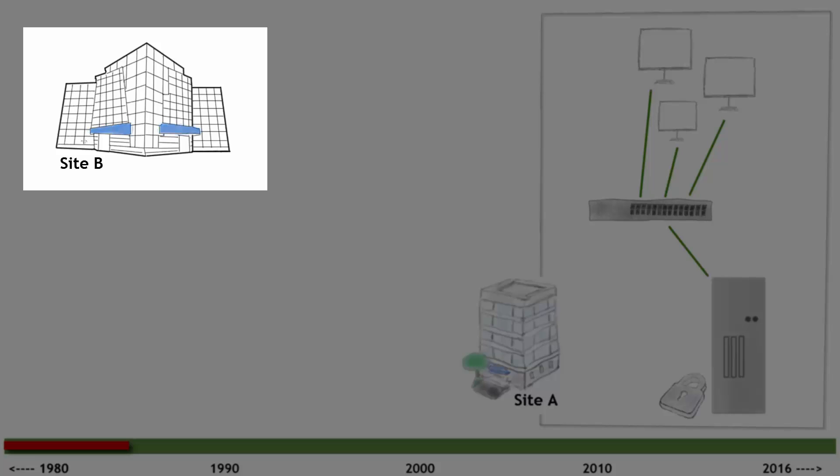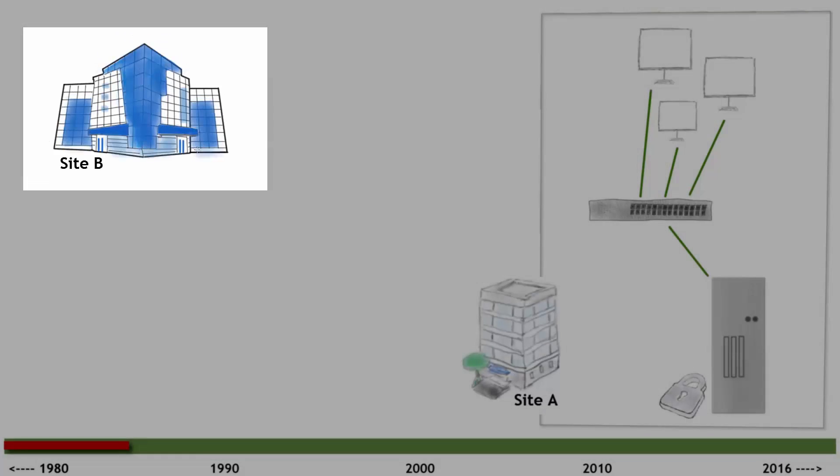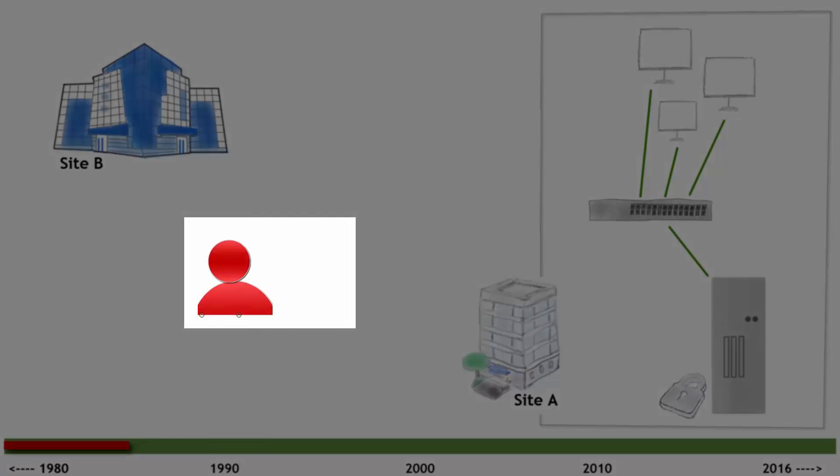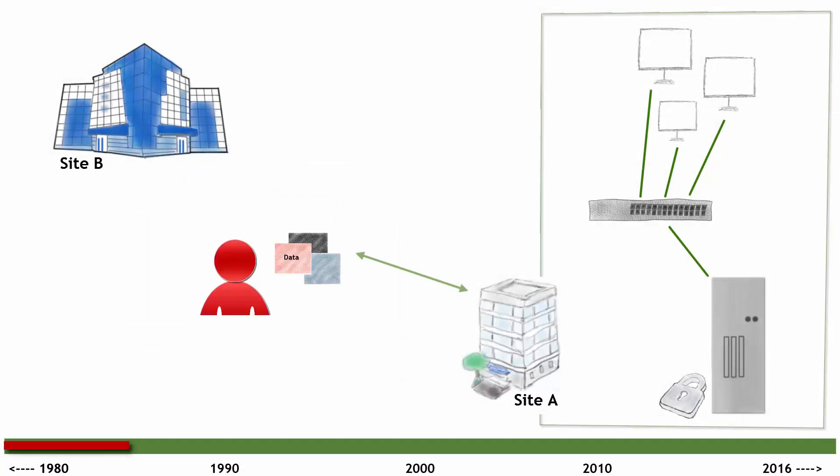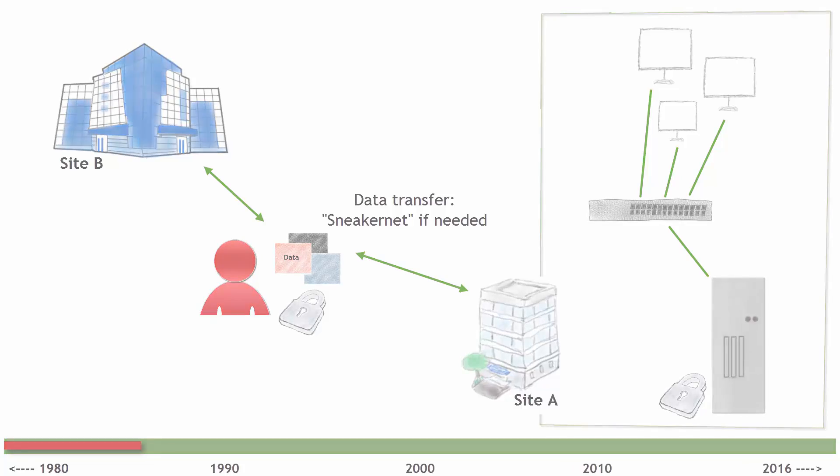Then we had geographically dispersed sites like Site B, and we'd have to get data back and forth. In general, it was a very manual process to move that data. In fact, we used something called sneaker net, which basically meant capturing the data and carrying it from Site A to Site B in a secure fashion.